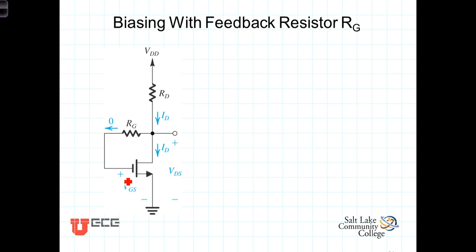Because current going into the gate of the transistor is zero, there will be no voltage drop across this resistor. Thus, the gate voltage will be the same as the drain voltage, or VGS will equal VDS.